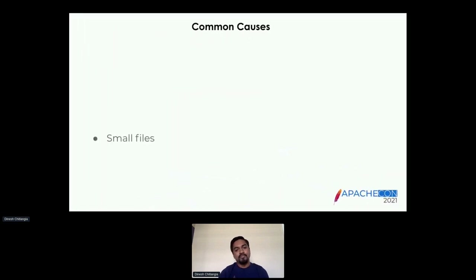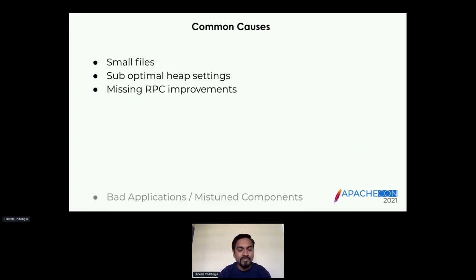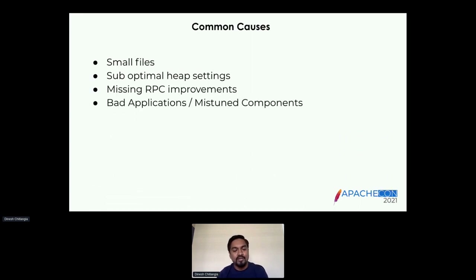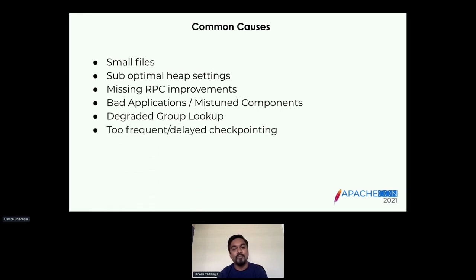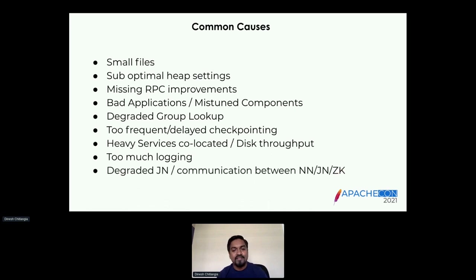Let's take a look at some of the common causes. The first one is small files — famously infamous around the globe after 10-plus years of Hadoop. Small files cause more havoc in the system than originally perceived, because it adds pressure on the NameNode metadata, since the NameNode stores all that metadata in memory.